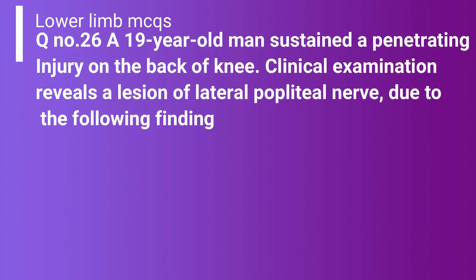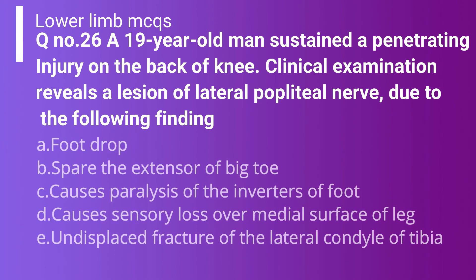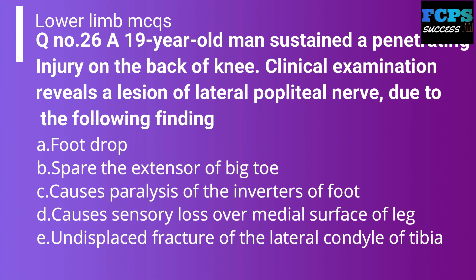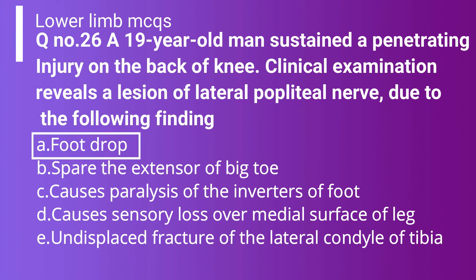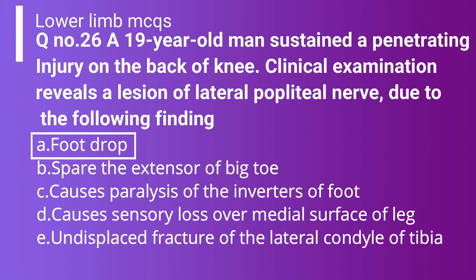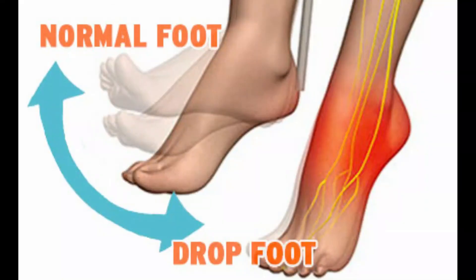Question 26: A 19-year-old man sustained a penetrating injury on the back of the knee. Clinical examination reveals lesion of the lateral popliteal nerve. Which finding supports this? Option A: Foot drop. Option B: Spares the extensor of the big toe. Option C: Causes paralysis of the inverters of the foot. Option D: Causes sensory loss of the medial surface of the leg. Option E: Undisplaced fracture of the lateral condyle of the tibia. This question uses 'lateral popliteal nerve' as an alternative name for the common peroneal nerve. The correct answer is Option A — foot drop — because injury to the common peroneal nerve causes foot drop.